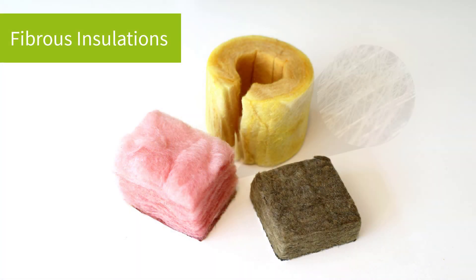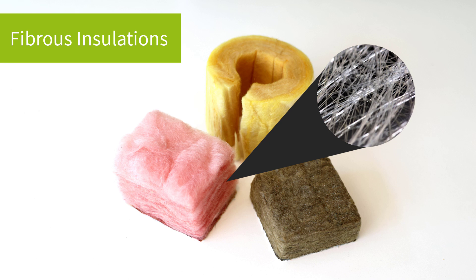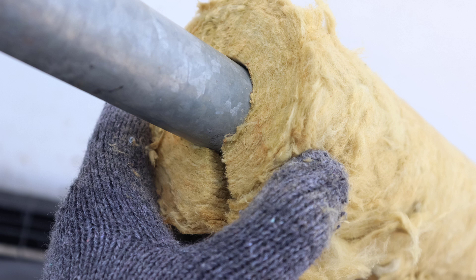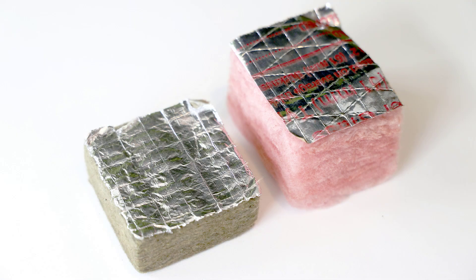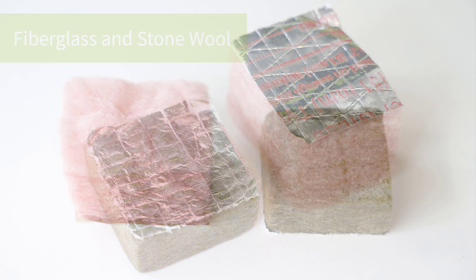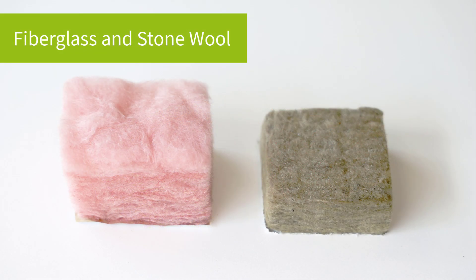Fibrous insulations are composed of small diameter fibers that finely divide the airspace and include varying levels of binders, depending on the application. Fibrous insulations tend to have high water absorption and high water vapor permeability. Therefore, a vapor retarder jacket or coating is needed to avoid moisture ingress. Examples of fibrous insulations include fiberglass and stonewool.